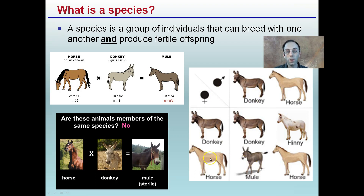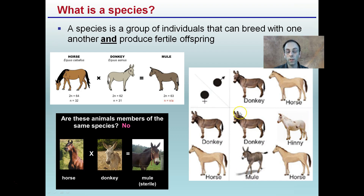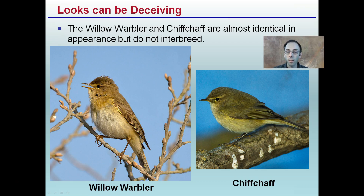When a horse and a donkey cross, you get a mule — specifically when the horse is the female and the donkey is the male. When those roles are reversed, with the horse as the male and the donkey as the female, the offspring is called a hinny. A horse bred with a horse produces a horse, a donkey with a donkey produces a donkey. Mules are not technically a species because they are sterile, and the pairing direction determines whether you get a mule or a hinny.